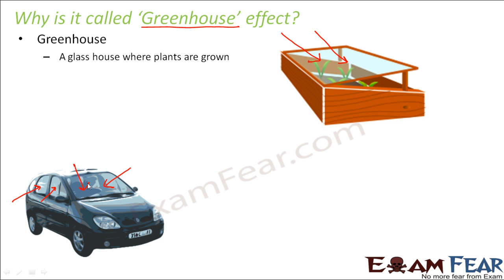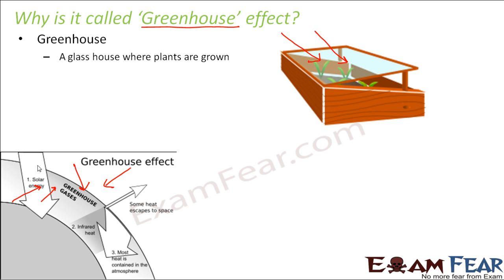The trapped solar radiation heats up the seats, chairs, and objects inside the car, which then emit infrared radiation. The infrared radiation gets trapped inside the car, heating up the interior. The same thing happens with the greenhouse effect — almost 70% of solar radiation enters, heats up the land, oceans, and Earth's surface, and when the infrared radiation tries to escape, most of it is absorbed by the greenhouse gases. That is how the Earth's temperature increases, and this is why the phenomenon is named the greenhouse effect and the gases are called greenhouse gases.